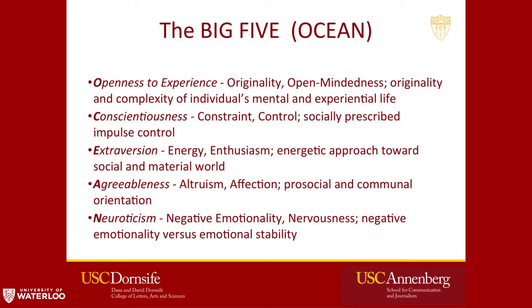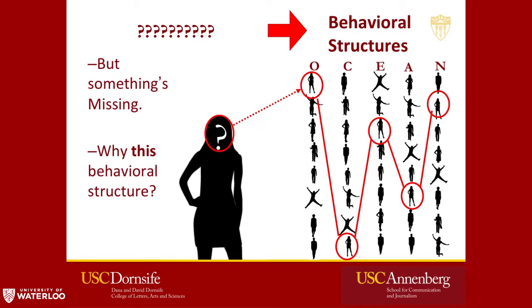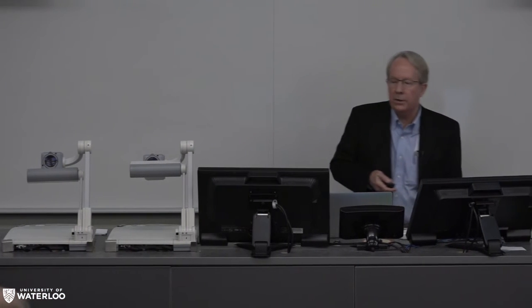The Big Five — also known by the acronym OCEAN — helps us structure behavioral variability. O is Openness to experience: originality, open-mindedness, complexity. C is Conscientiousness: constraint, control, socially prescribed impulse control. E is Extraversion: energy, enthusiasm, an energetic approach to the social and material world. A is Agreeableness: getting along with others, altruism, affection. N is Neuroticism: negative emotionality, nervousness, negative emotional responses to events. This structure has been replicated again and again, but why do we have it?